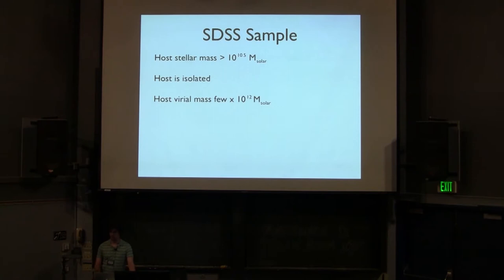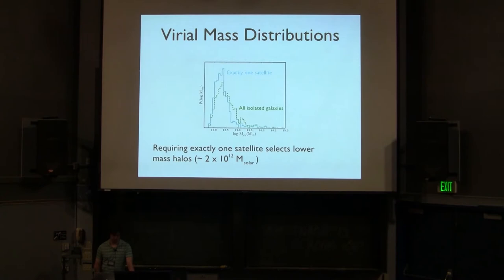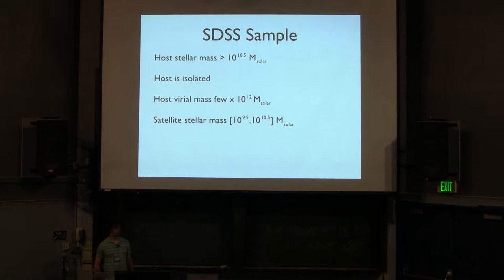And then our goal is to select hosts that have a virial mass of about a few times 10 to the 12 solar masses. To get a handle on that, what we did is we applied our selection and isolation scheme to the mock observations in the Millennium II simulation. And so in the green there is a distribution of virial masses just of our fiducial isolation scheme. And then in the cyan is a normalized distribution of the virial masses of galaxies where we've required they have exactly one satellite galaxy. And by requiring exactly one satellite galaxy we do a better job of selecting galaxies that are strongly peaked around a few times 10 to the 12 solar masses in virial mass.